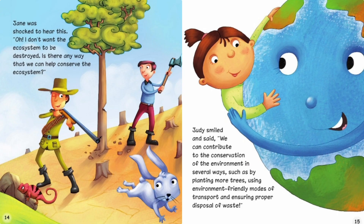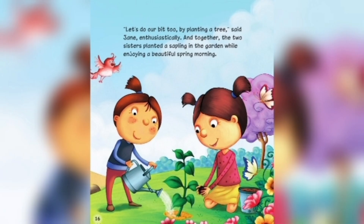Jane was shocked to hear this. 'Oh, I don't want the ecosystem to be destroyed. Is there any way that we can help conserve the ecosystem?' Judy smiled and said, 'We can contribute to the conservation of the environment in several ways, such as by planting more trees, using environment-friendly modes of transport, and ensuring proper disposal of waste.' 'Let's do our bit too, by planting a tree,' said Jane enthusiastically. And together, the two sisters planted a sapling in the garden, while enjoying a beautiful spring morning.